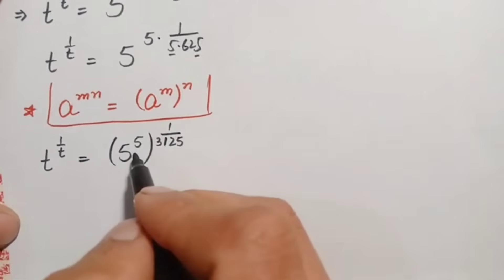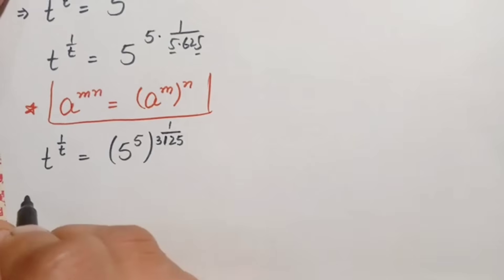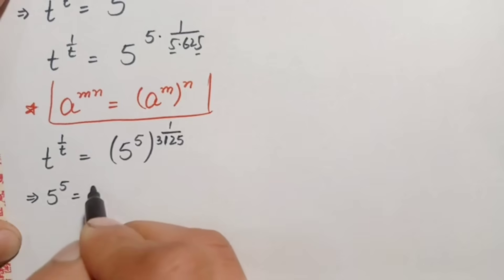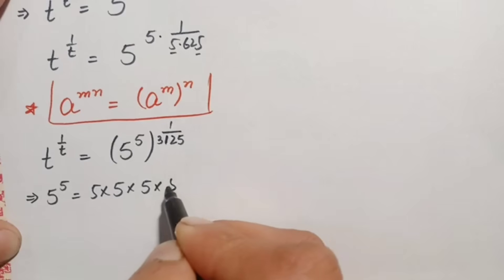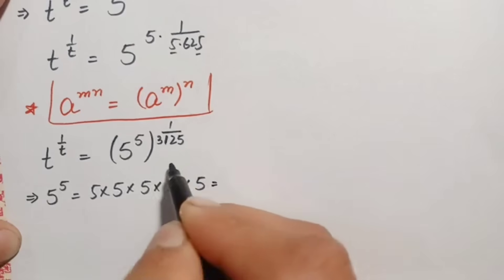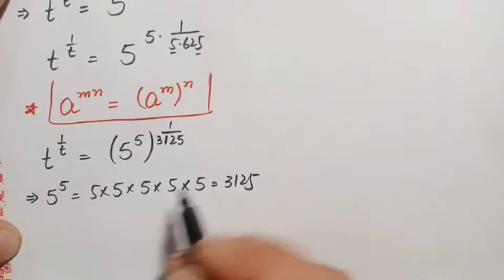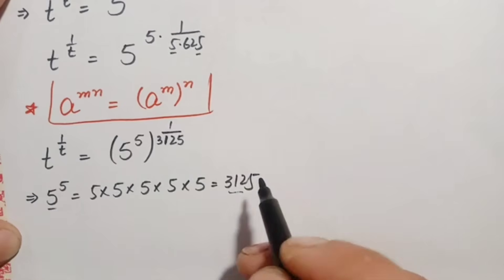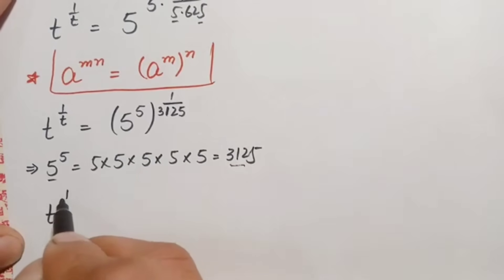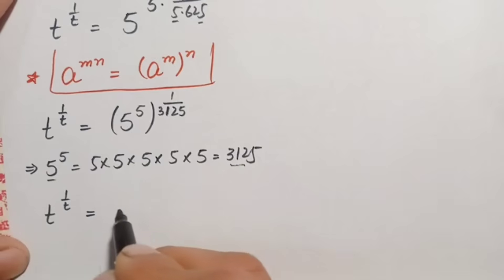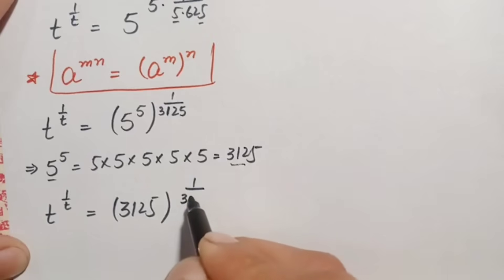Now we find the value of 5 raised to power 5. We can compute: 5 times 5 is 25, 25 times 5 is 125, 125 times 5 is 625, and 625 times 5 is 3,125. Therefore 5 raised to power 5 equals 3,125. We substitute this value back, so the right-hand side becomes 3,125 raised to power 1 by 3,125.